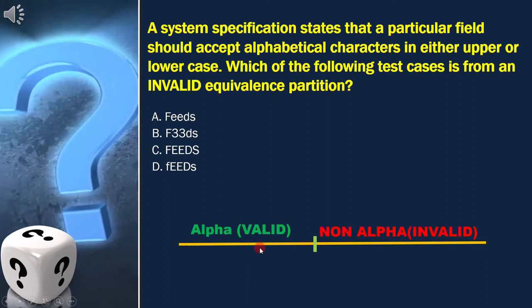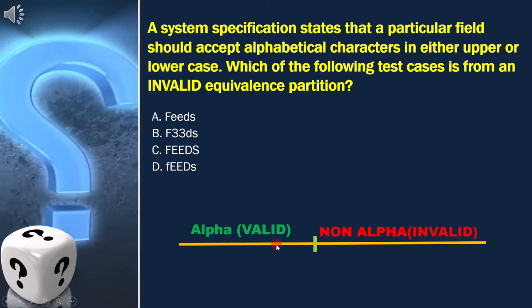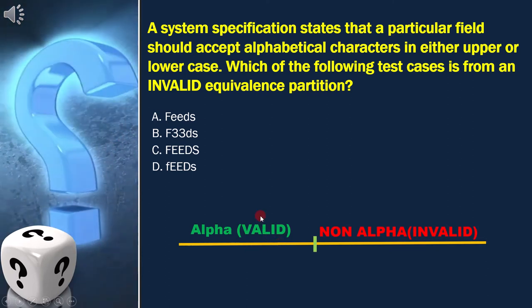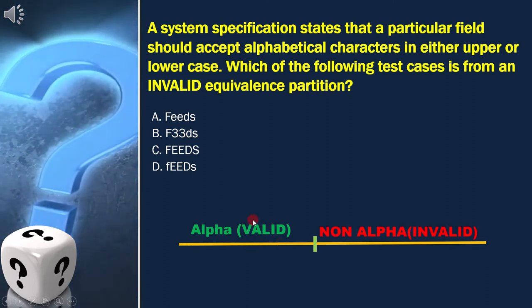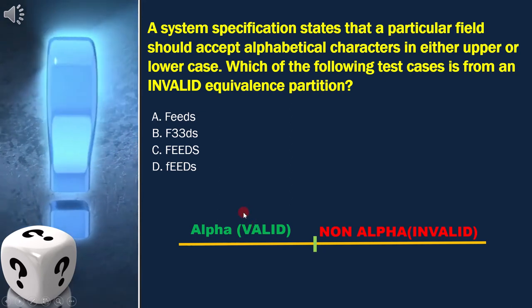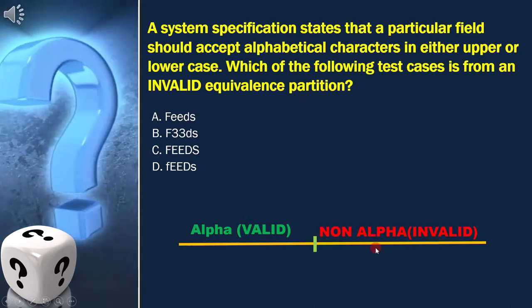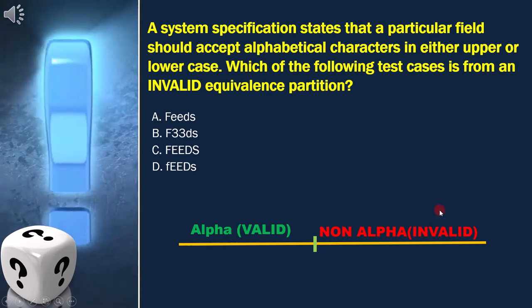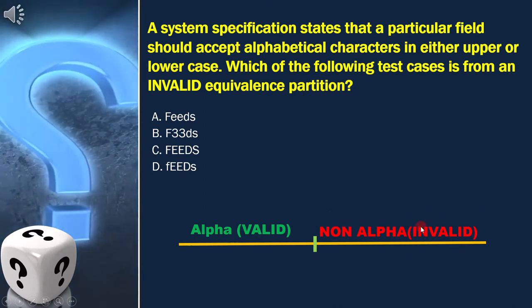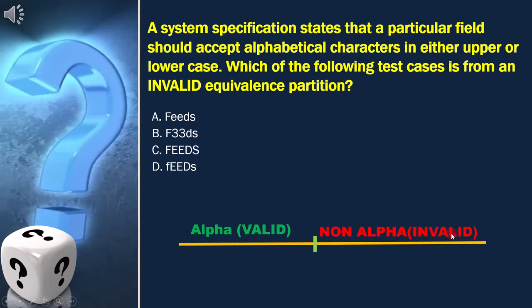As per the question, we will have two equivalence partitions: one for alpha characters, which is the valid class, and another for non-alpha characters, which is the invalid class.